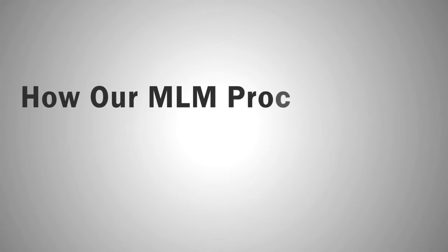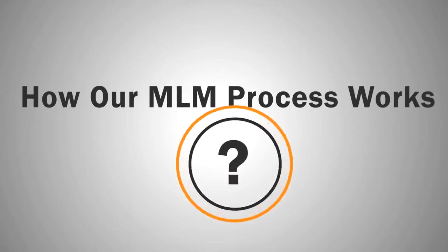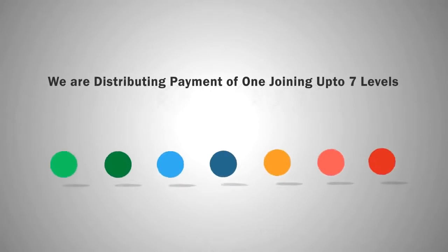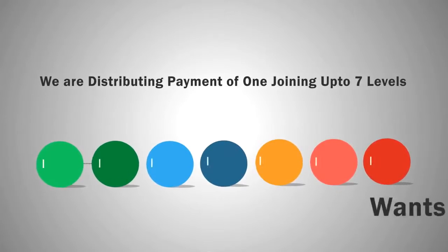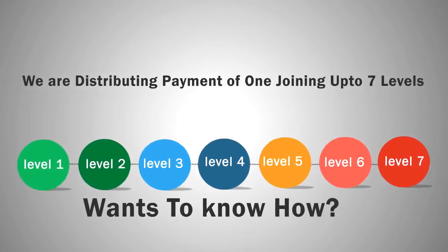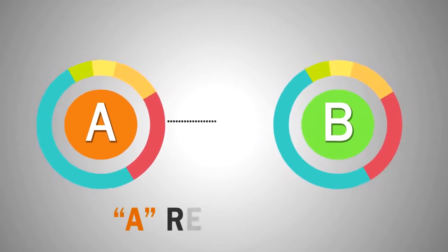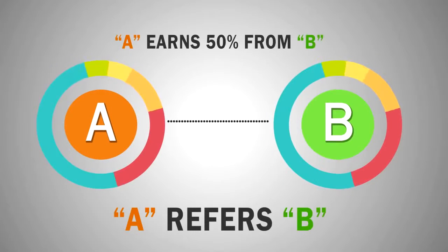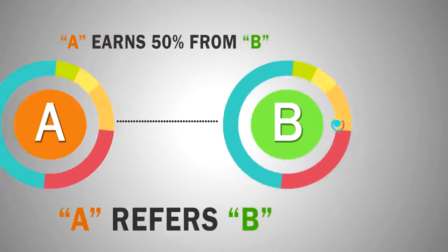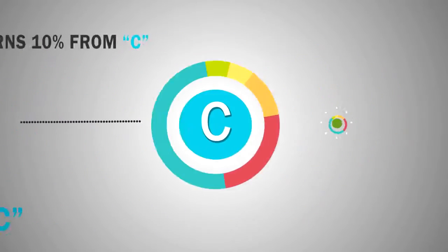Now let's know how our network marketing process works. After completing the challenge by your friend, we are distributing its payment up to 7 levels. Suppose user A refers B — then due to B joining, A will get 50% of the payment from it. If B refers C, then A will again earn 10% commission from it.